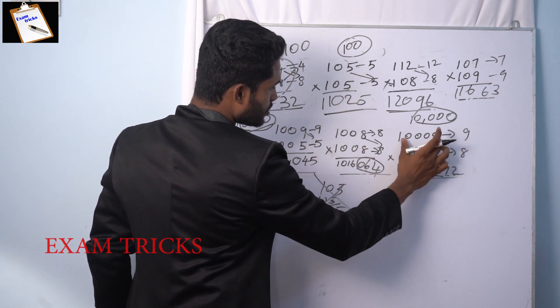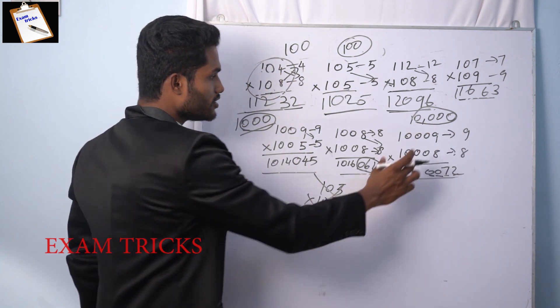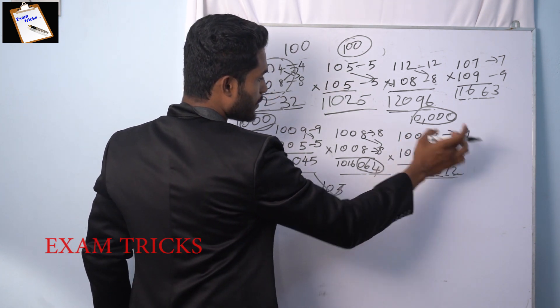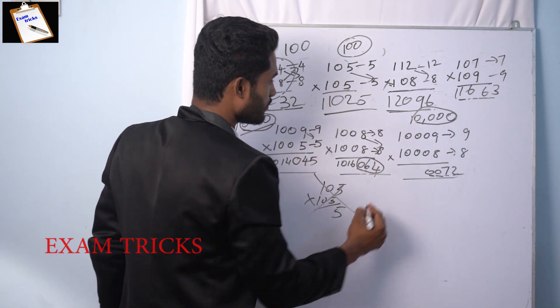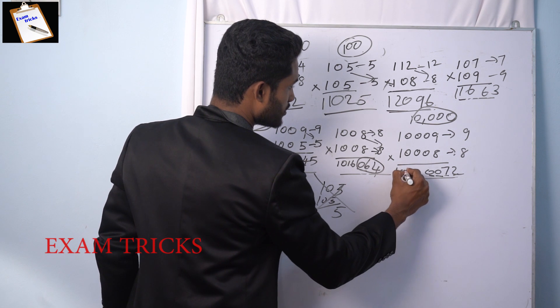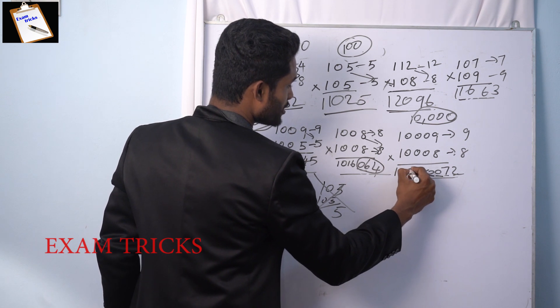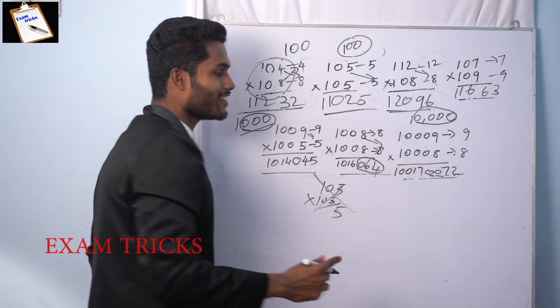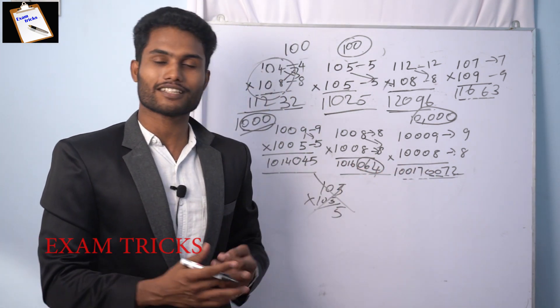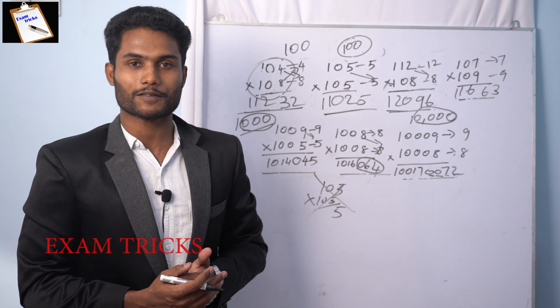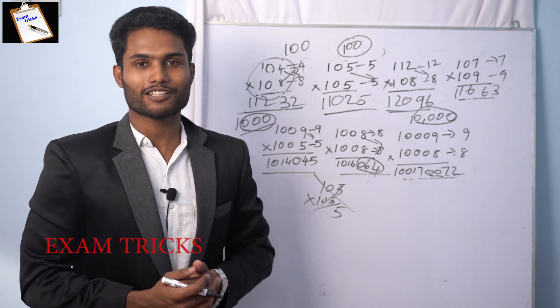Then 100, 9 into 8 is 72, and 100, 9 plus 8 is 17. So now 1,017. So our answer is 1,017,072 — easier to say.